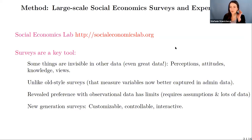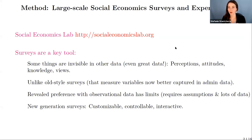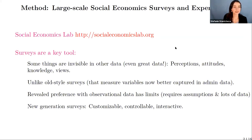In principle, revealed preference methods could play a role — one can imagine writing a fully structural parametric model of beliefs and using observational data on behaviors to estimate underlying unobservables. The problem is that for many issues this requires a lot of assumptions and structure we don't yet know about, plus real-world variation we don't actually have. We're not asked every day to vote directly on many separate issues, so a lot of required variation is missing.